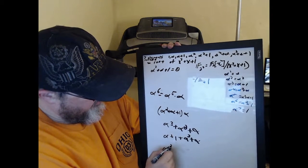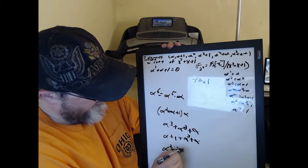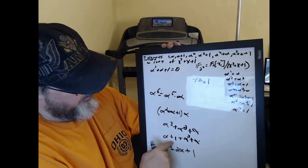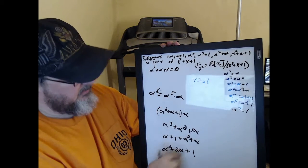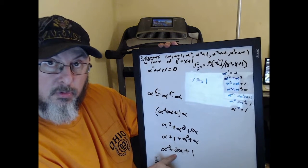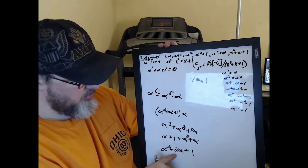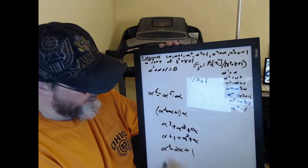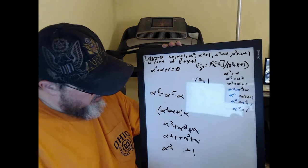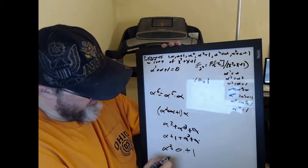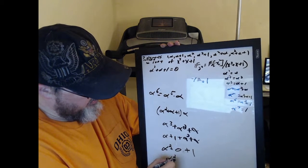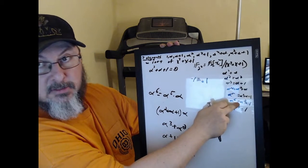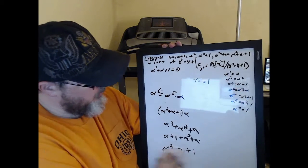So that is alpha squared plus 2 alpha plus 1. But again, this is mod 2, so 2 is equivalent to 0 mod 2, so this is actually just alpha squared plus 1, which is alpha to the sixth.